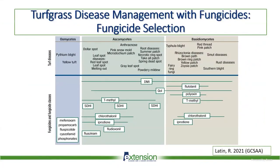Properly identifying the problem matters because different fungicides with different modes of action have different activities on different plant diseases. For oomycetes like Pythium blight or yellow tuft, you have very specific fungicides with activity against those — many of your SDHIs, DMIs, or QOIs will not have activity against oomycetes. DMIs have pretty good broad-spectrum activity against several plant diseases. Some SDHIs are more specific to dollar spot, gray leaf spot, and some patch diseases.